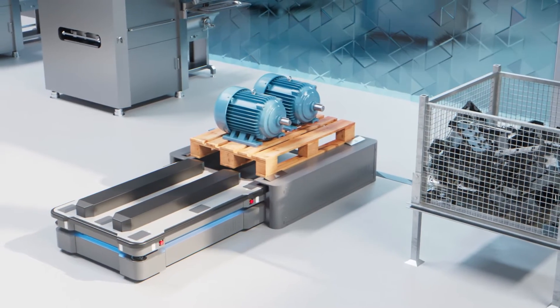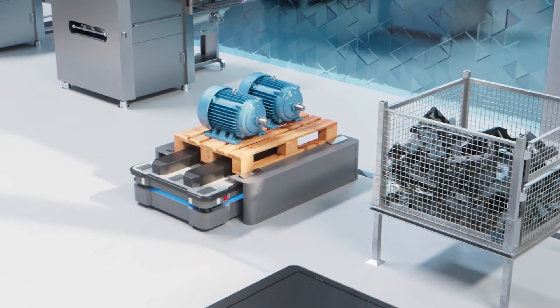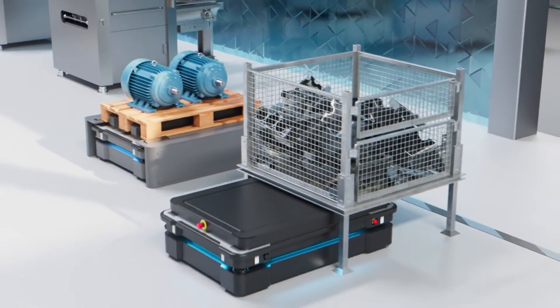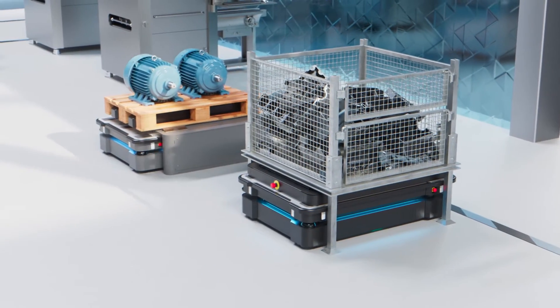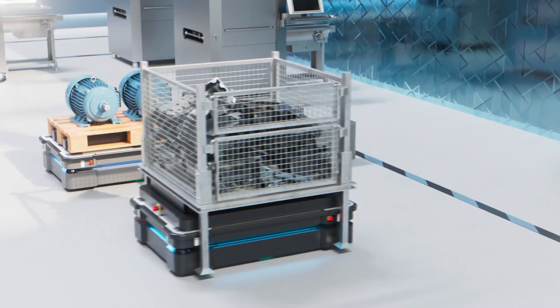The MiR 600 can carry payloads weighing up to 600 kilos, and the MiR 1350 can transport payloads up to an astonishing 1,350 kilos.